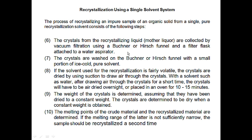Once we have those crystals, we filter them by vacuum filtration using a Buchner funnel and a filter flask connected to the vacuum system — not a water aspirator. Make sure it is clamped properly. Once the crystals are on the Buchner funnel with filter paper, we add a small portion of ice-cold solvent to wash them. If the recrystallization solvent is fairly volatile, we try to dry the crystals by allowing air to flow through them while the vacuum is on.